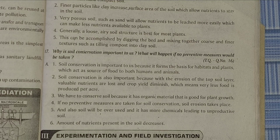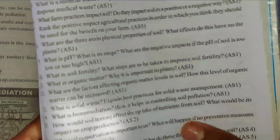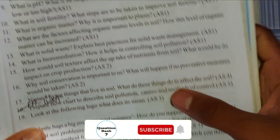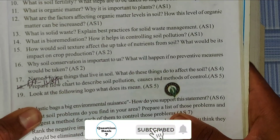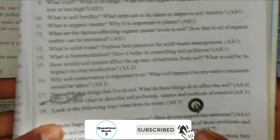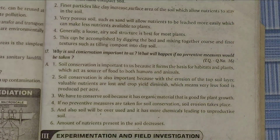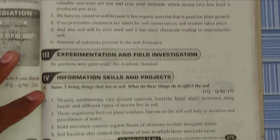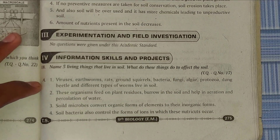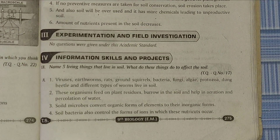I will go to the 17th question. You can see here in the test book the 17th question — name five living things. Now I will see the 17th question answer in the question bank. You can see the question answer here.